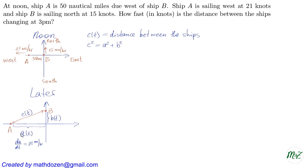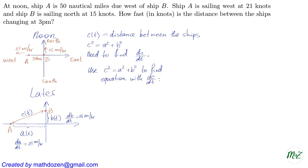Since Ship A is sailing west at 21 miles an hour, the rate of change of the horizontal distance is dA/dt = 21 miles an hour. Ship B is sailing north at 15 miles an hour, so dB/dt = 15 miles an hour. We can use the equation C² = A² + B² to find the rate of change of the distance between the two ships.